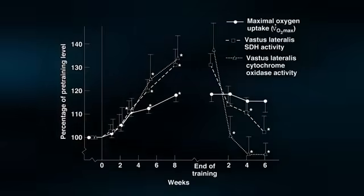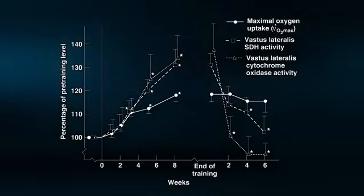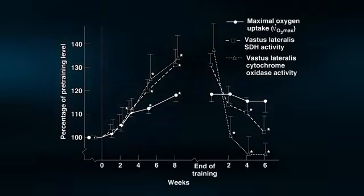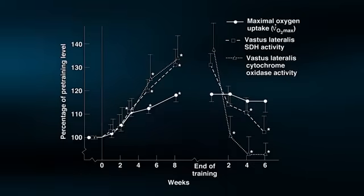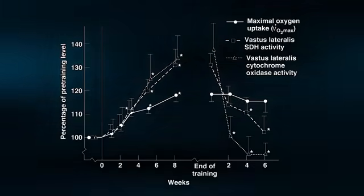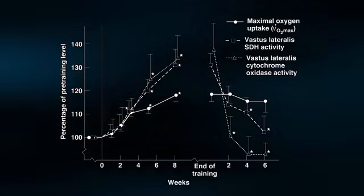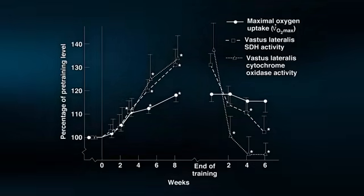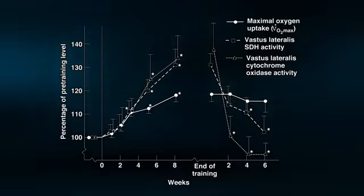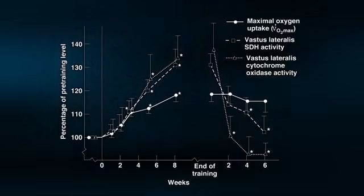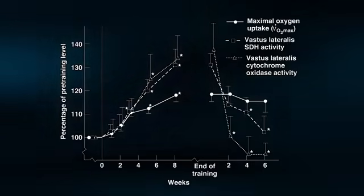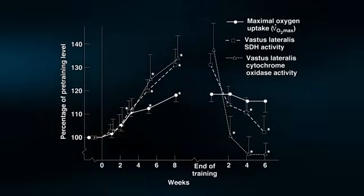Shown here is a classic example of the reversibility principle. Previously sedentary individuals were endurance trained for eight weeks. The standard markers for endurance training were measured. These include markers of mitochondrial oxidative capacity and maximal oxygen uptake, or VO2 max. As can be seen, as per the overload principle, eight weeks of endurance training resulted in increases in all of these variables.